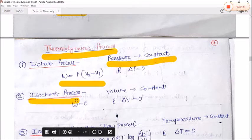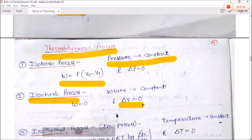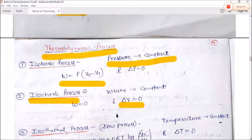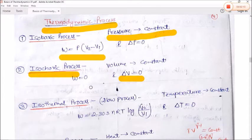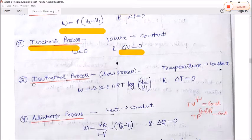Next is the isochoric process — volume is constant. Here W = 0 and ΔV = 0, since volume is constant its derivative is zero.